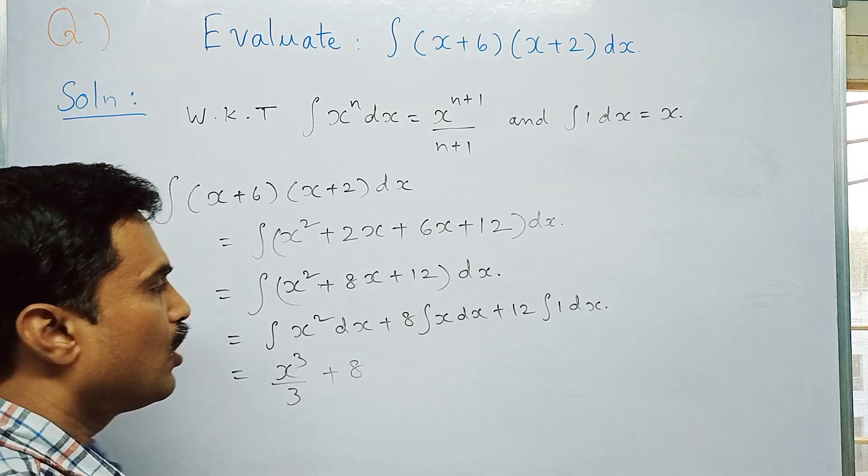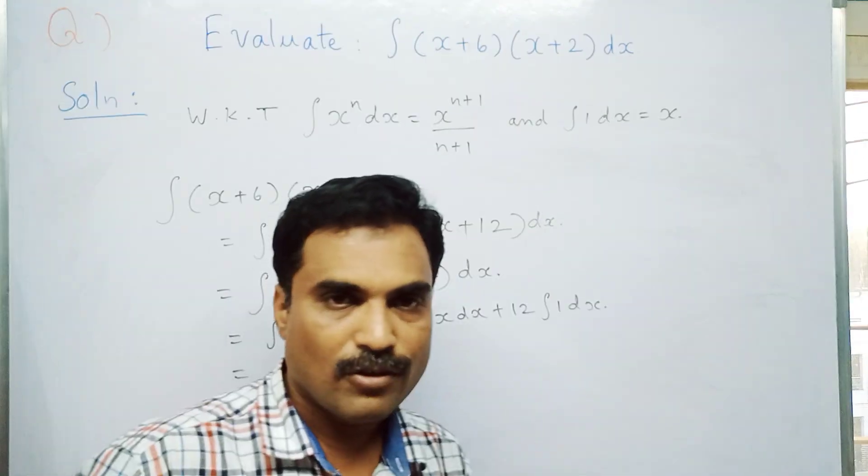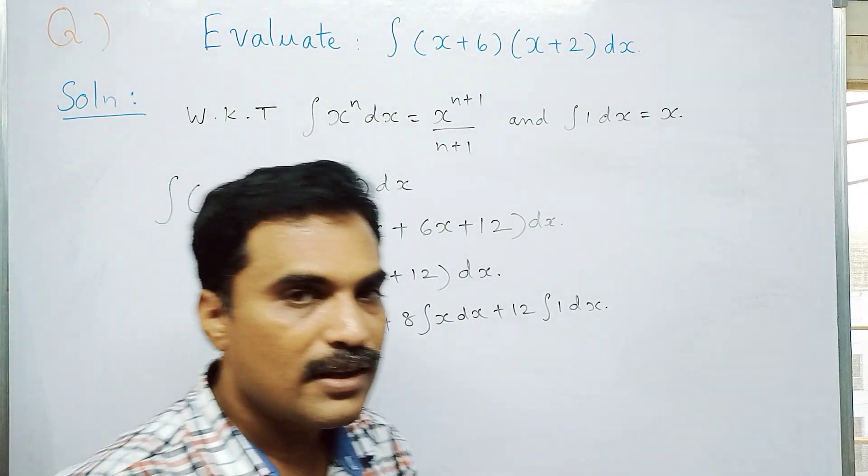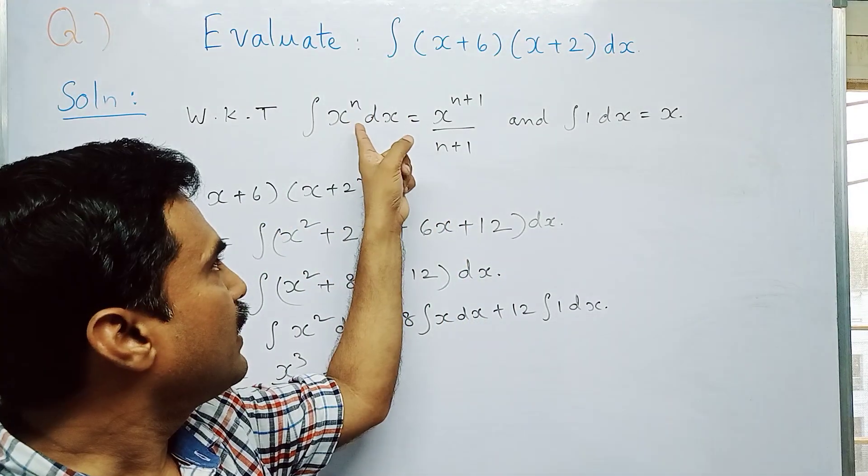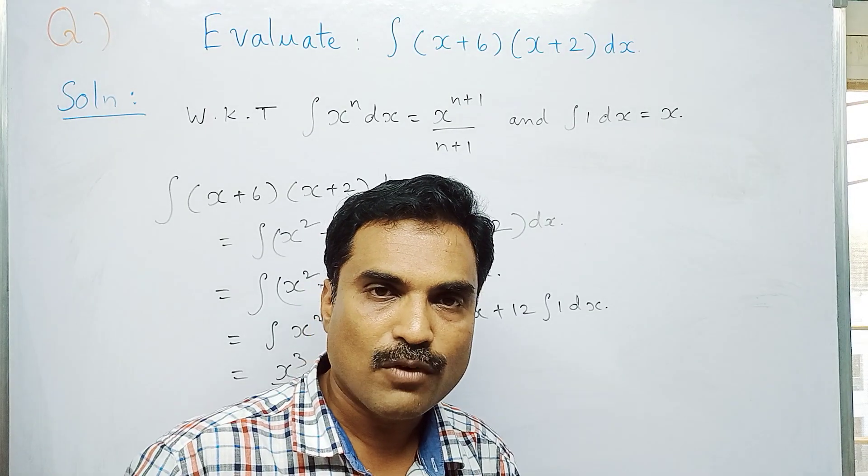Plus 8 into: what is integral x dx? Since there is no power above x, take it as 1. Put n value as 1: x^(1+1)/(1+1), which means x²/2. So 8 into x²/2.